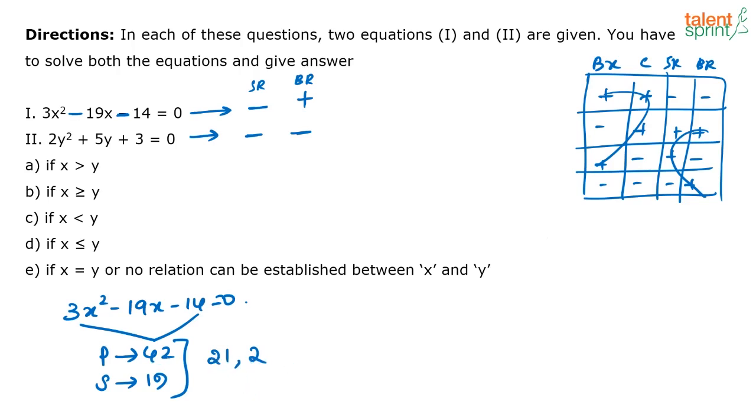Now, what will be the respective roots that I am looking at? See, 21 and 2, right? Now this value of a here is 3. So you have to divide the roots that you get by 3. So these are the two roots that I am looking at.